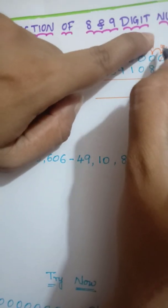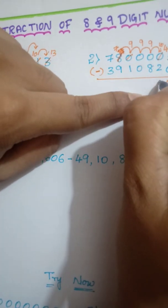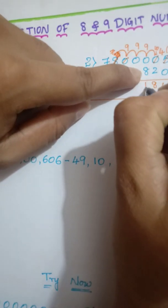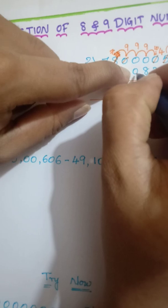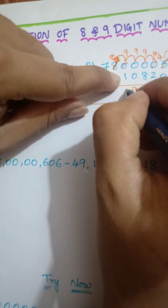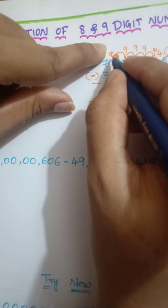So now 10 minus 2, 8. 9 minus 8, 1. 9 minus 0, 9. 9 minus 1, 8. Here 7 is there.